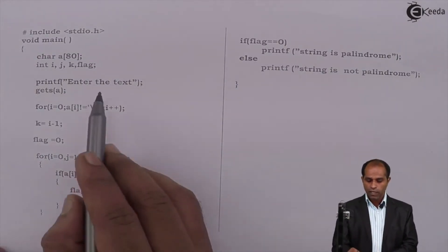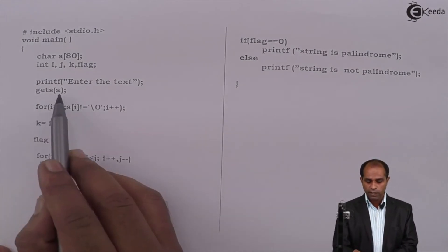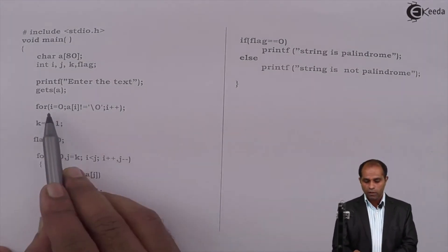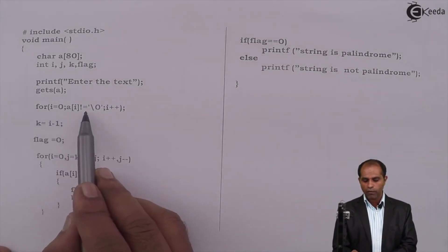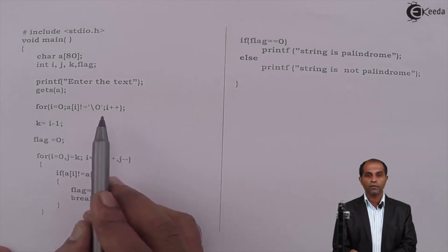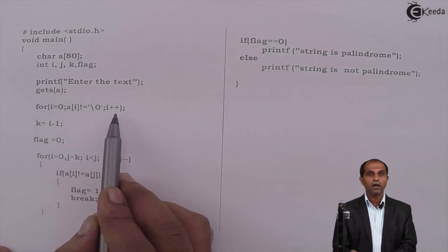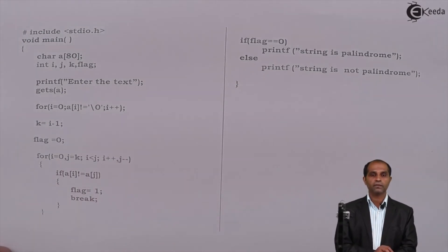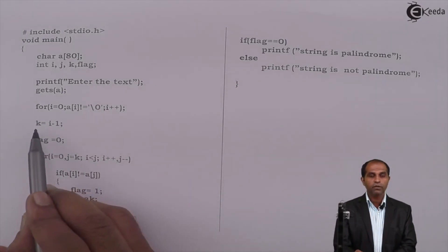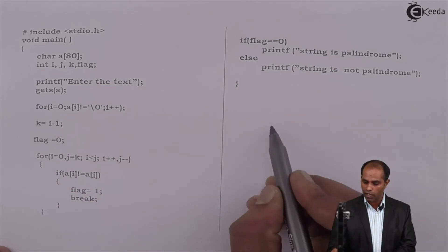I'll have a program at this place. So I'll ask the user to enter the text, read the text as 'a'. for(i=0; a[i]!=null; i++); - semicolon. What this does is it takes you till the index of null character. Minus one will give you the index of last character.